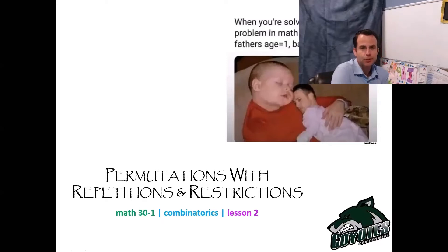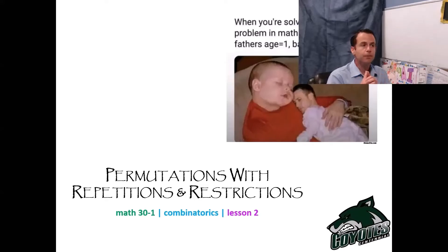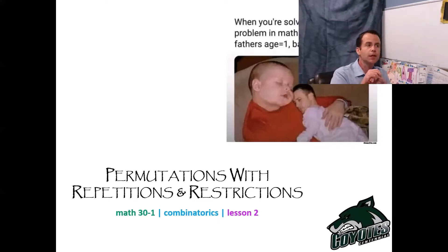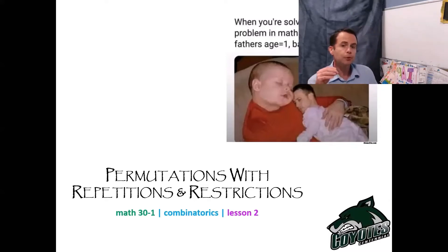Let's begin with Combinatorics Lesson 2: Permutations with Repetitions and Restrictions. Yesterday we talked about what a permutation is — it's essentially an arrangement of a group of elements where the order is important. So changing the order produces a different result.